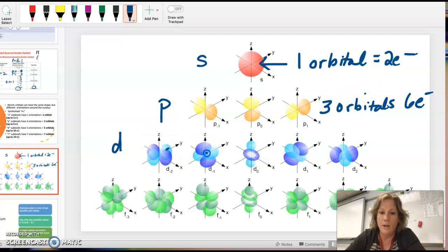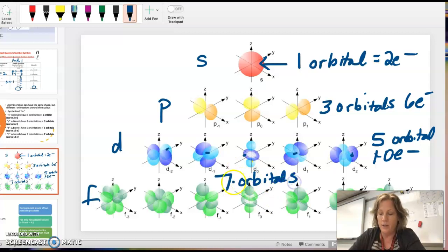The D, you can see there's one, two, three, four, five. Five ways it could be in space, so five orbitals. The D shape can hold up to ten electrons. And then the F has seven. There's seven different pictures here, or ways that it can be around the X, Y, and Z axis.